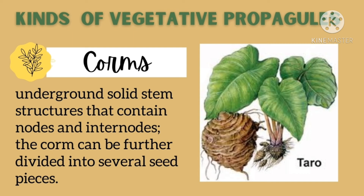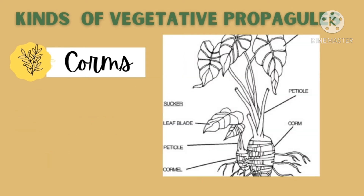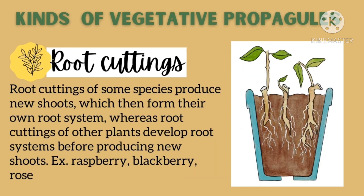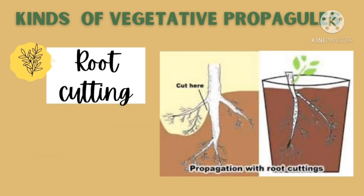Next is corms — corms are an underground solid stem structure that contains nodes and internodes. The corm can be further divided into several seed pieces. Next is root cuttings — root cuttings of some species produce new shoots which then form their own roots, whereas root cuttings of other plants develop a root system before producing new shoots. Examples are raspberry, blackberry, and rose.